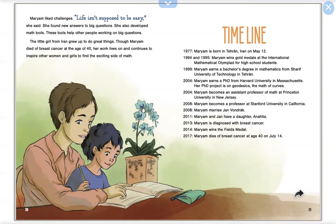2011, Maryam and John have a daughter, Anahita. 2013, Maryam is diagnosed with breast cancer. 2014, Maryam wins the Fields Medal. 2017, Maryam dies of breast cancer at age 40 on July 14th.